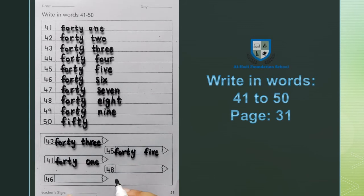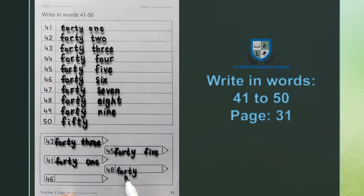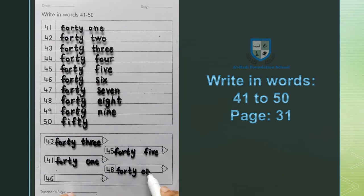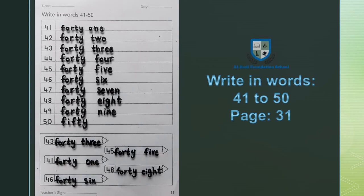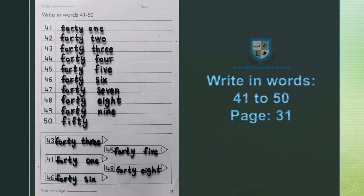Next 48: F O R T Y, forty, E I G H T, eight, forty eight. Last is 46: F O R T Y, forty, S I X, six, forty six. We have written 41 to 50 and then we have written numbers in words.